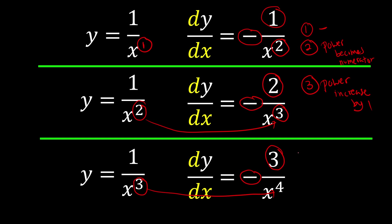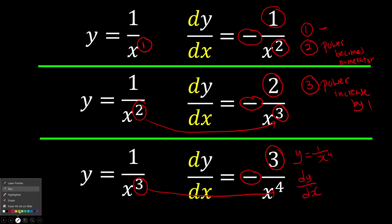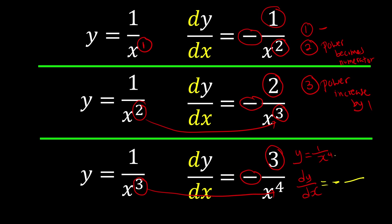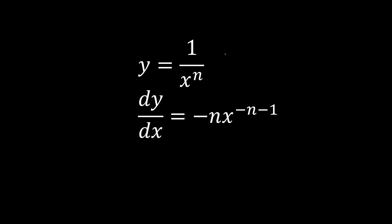So let's say now I try to find the derivative of y equal to 1 over x to the power of 4. If I follow my pattern, the answer should be: first thing must be a negative, and it must be a fraction, and the power becomes the numerator. So 4 becomes the numerator, and the power itself increases by 1. Without doing much work, I can find the derivative of 1 over x to the power of 4.